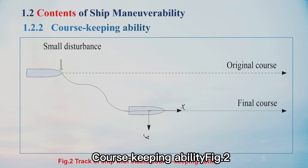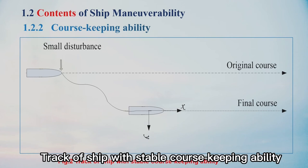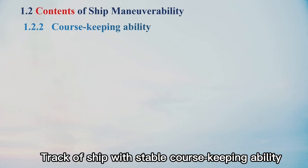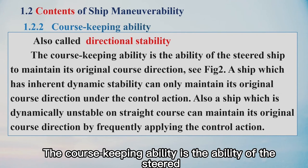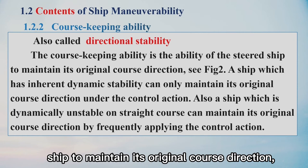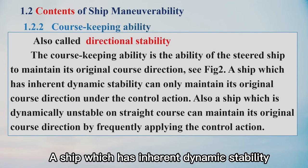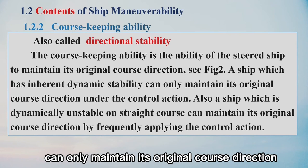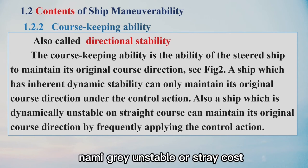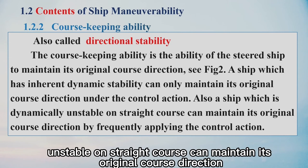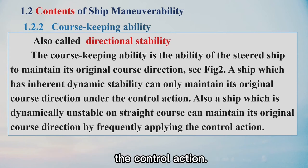Course-keeping ability, also called directional stability, is the ability of the steered ship to maintain its original course direction. A ship which has inherent dynamic stability can only maintain its original course direction under control action. Also, a ship which is dynamically unstable on a straight course can maintain its original course direction by frequently applying control action.